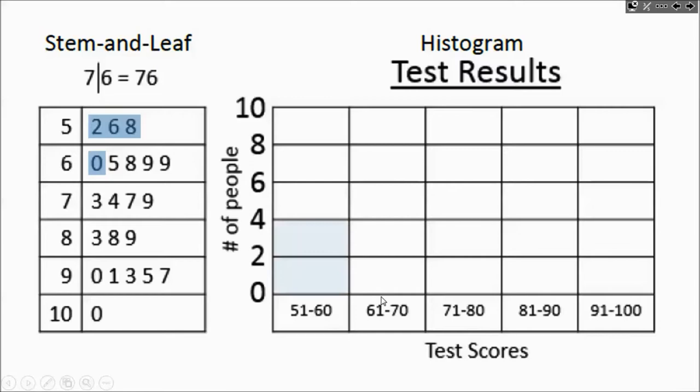61 to 70. We've got these three, four, nothing in the next row. There's no 70s. So it's just going to be those four.